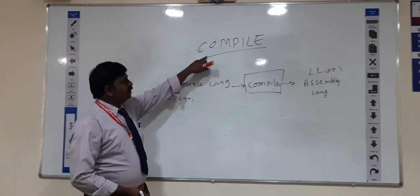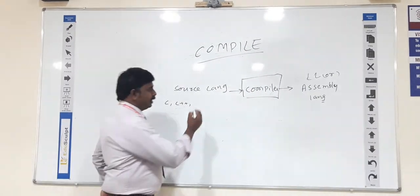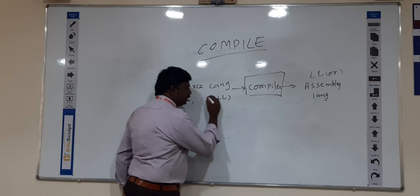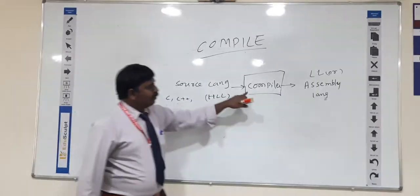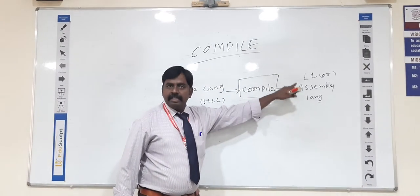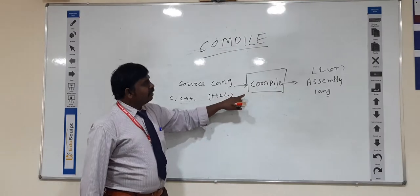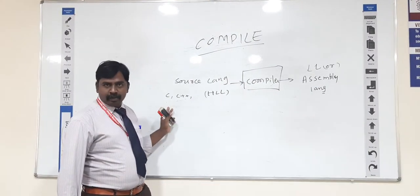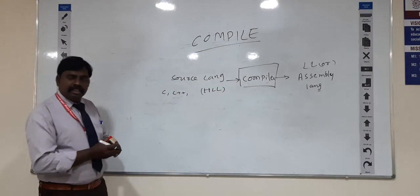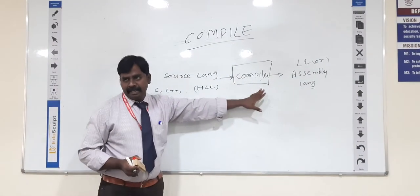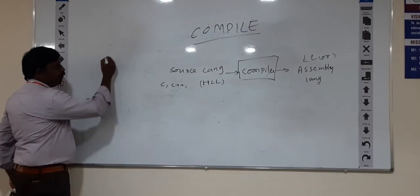So what is the meaning of compiler? It will convert the source level — sometimes referred to as a high-level language or source language — to a low-level language or assembly language. The conversion is used so that the machine can understand whatever program you are writing, whether in C, C++, Python, etc. All these programs will be compiled from source to high-level language.